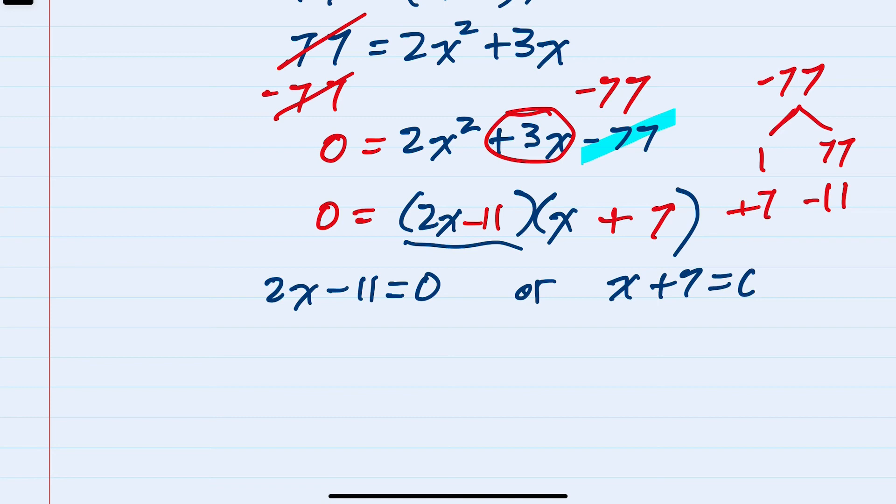Solving each of these, I have on the left, moving the 11 over, 2x equals 11. Dividing by 2, x is 5.5. On the right hand side, subtracting the 7 over, we have x equals negative 7.